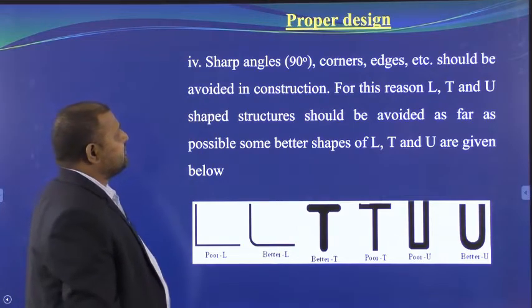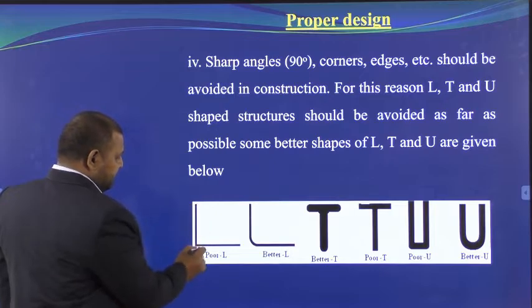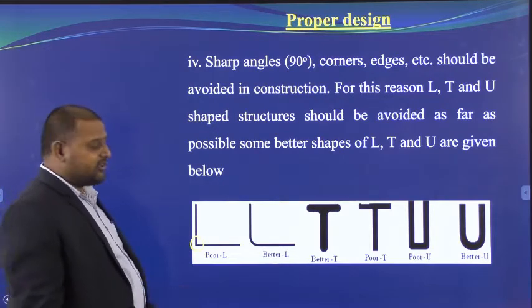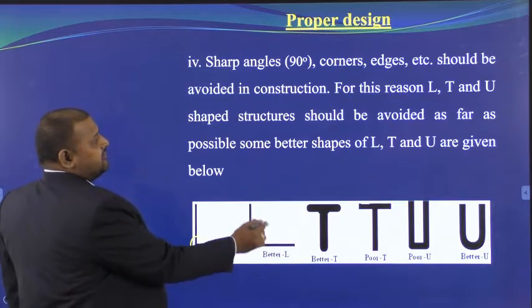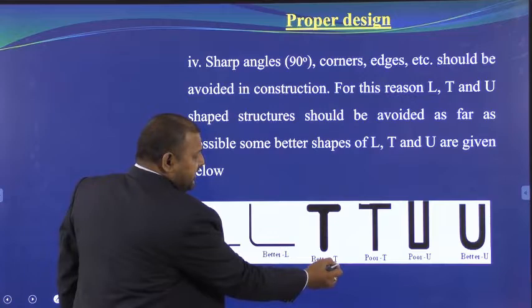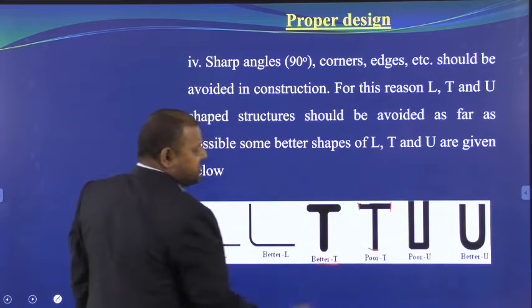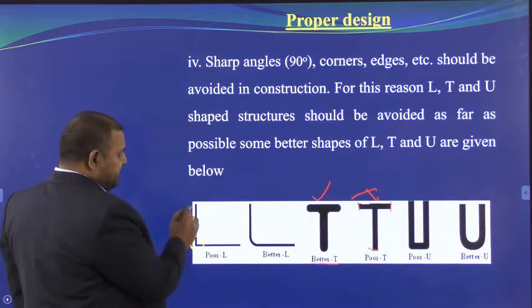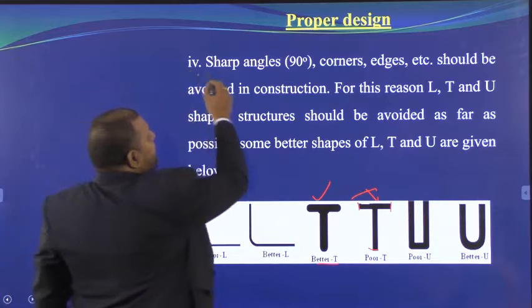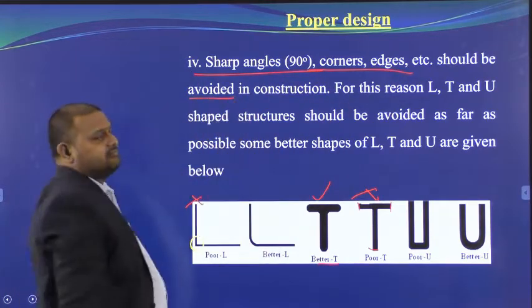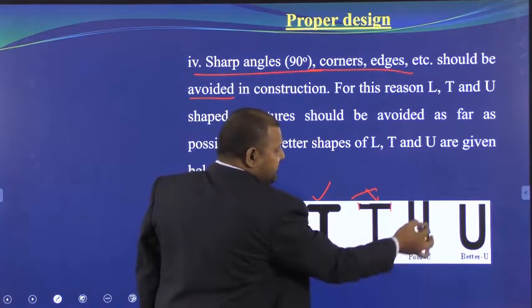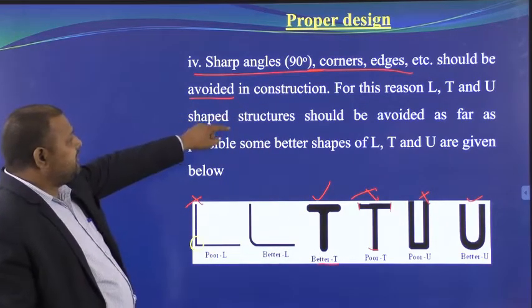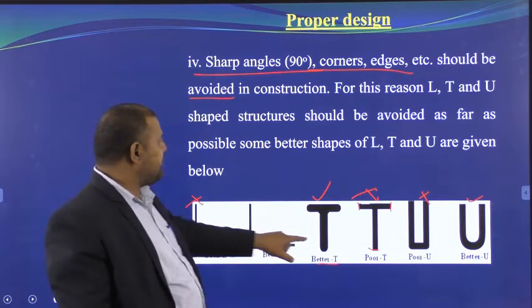Sharp angles, corners and edges should be avoided in design. At sharp corners, corrosion tends to concentrate. For L-shapes, T-shapes and U-shapes, use rounded designs rather than sharp-edged ones. Sharp angles should not be present; smooth, rounded shapes are correct and preferred to minimize corrosion.